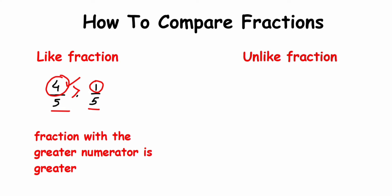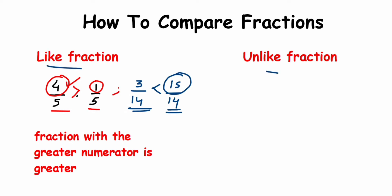Let's take another example: 3/14 and 15/14. Comparing the numerators, 15 is greater than 3, so 15/14 is greater than 3/14. This rule is applicable only for like fractions.